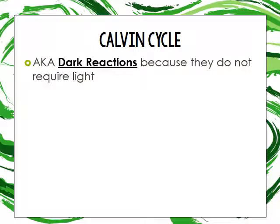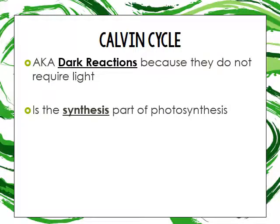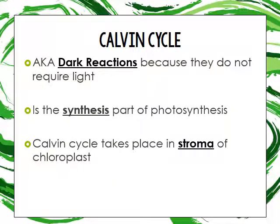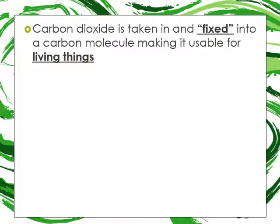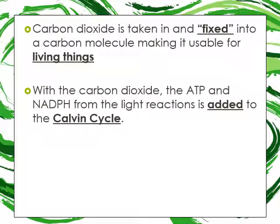The Calvin cycle is the second half of photosynthesis — the dark reaction because it doesn't require light. It is the synthesis part of photosynthesis and takes place in the stroma of the chloroplast, not the thylakoid membrane. Carbon dioxide is taken in and fixed into a carbon molecule, making it usable for living things. ATP and NADPH from the light reaction are added to start the Calvin cycle.